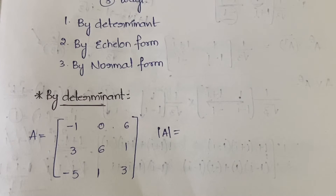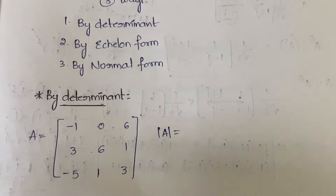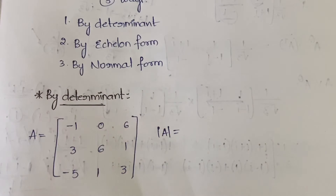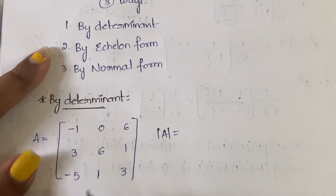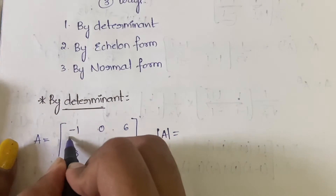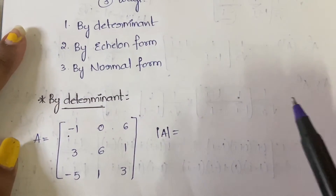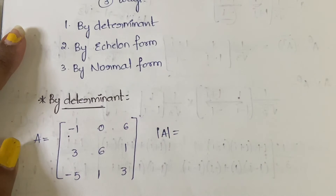So first, by determinant — for this matrix, how will you calculate the rank using the determinant method? The first step is you have to assign the signs. The signs start with plus, minus, plus. So you begin with the first element.